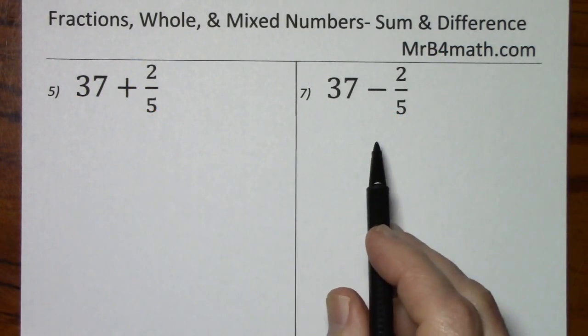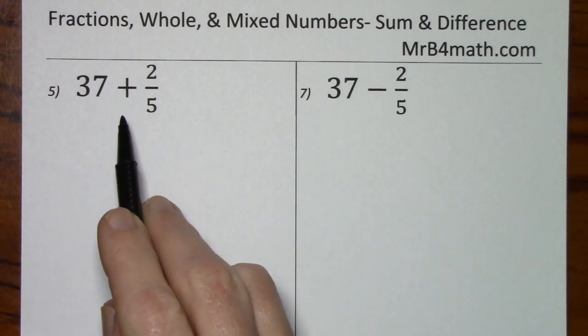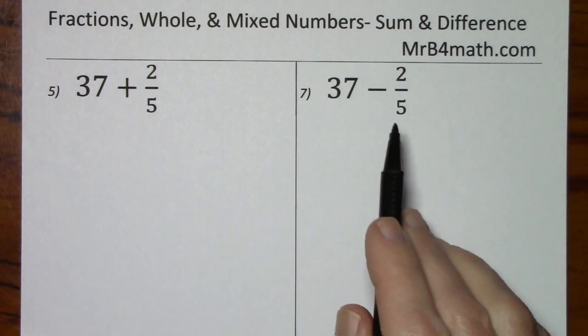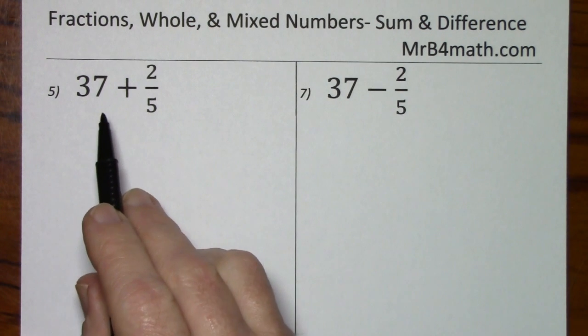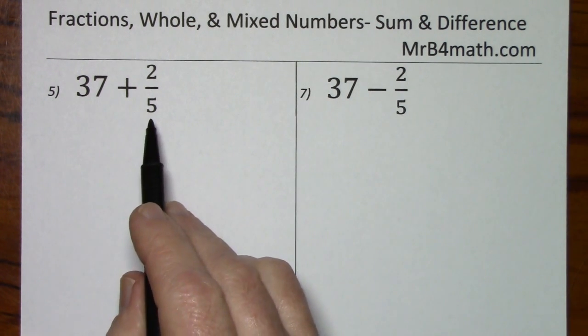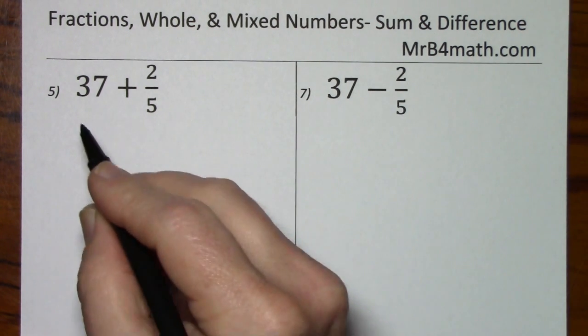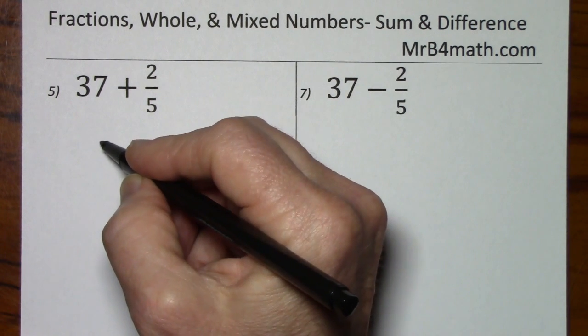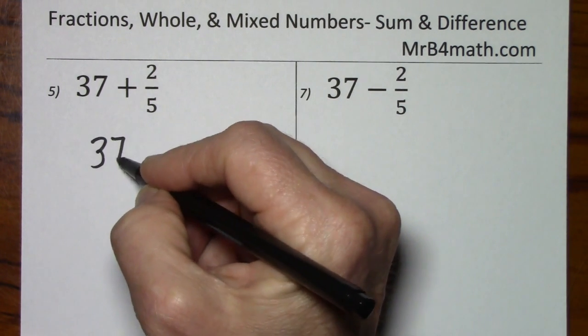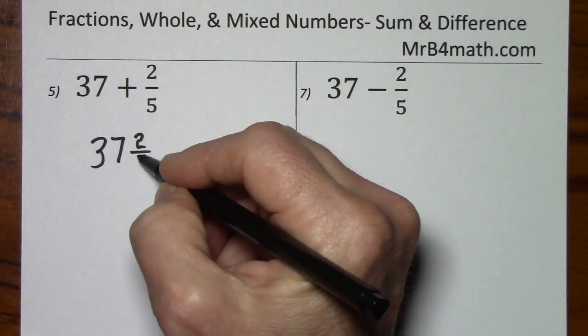Notice these two problems are similar. This one, the signs are the same. This one, the signs are different. When you're adding a whole number and a fraction, you can just put them together. 37 plus 2 fifths is 37 and 2 fifths.